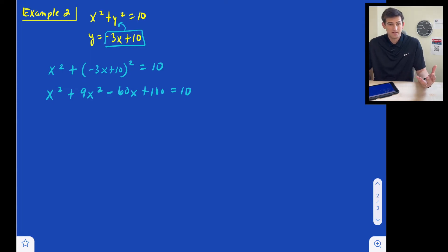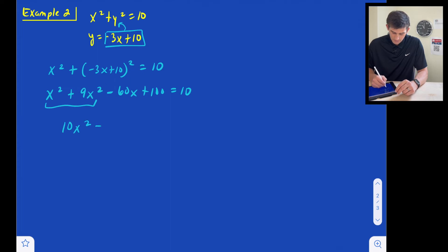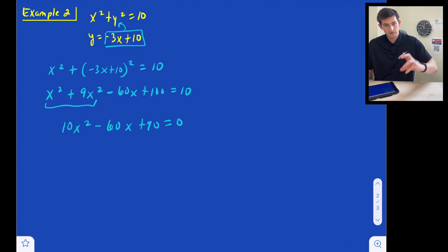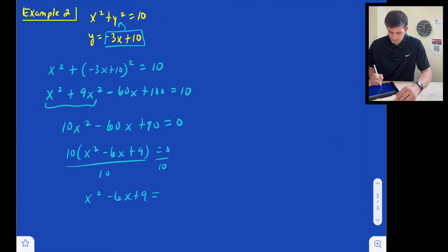The expansion pattern is a squared plus 2ab plus b squared. Combining like terms, we get 10x squared minus 60x, and subtracting 10 from both sides gives us 10x squared minus 60x plus 90 is equal to zero. Let's factor this — factoring out 10 first, we get 10 times x squared minus 6x plus 9 is equal to zero. Dividing both sides by 10, we have x squared minus 6x plus 9 is equal to zero.